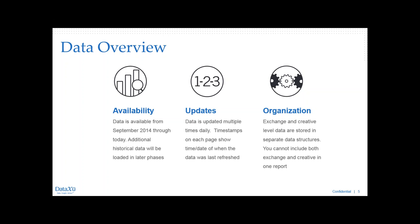One slight change we've made is that we've stored creative and exchange level data in separate data structures. The upside is that we're able to get you data much quicker, especially exchange data. However, since they're stored in separate structures, we're no longer able to pull a report that includes both exchange and creative out of this tool. You can pull a report by exchange, or a report by creative, but not one that includes both fields.